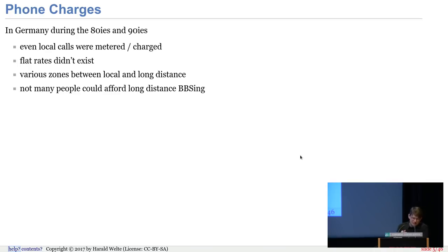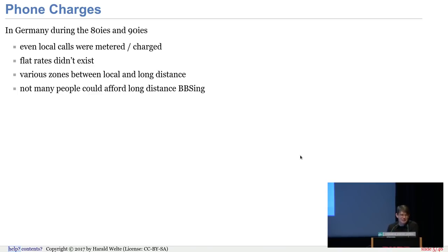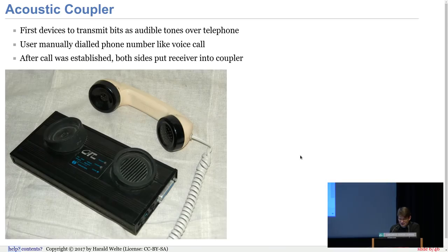Something to document for the international audience: in Germany at that time, even local calls were metered and charged by the minute. Flat rates didn't exist. There were multiple zones — not just local and long-distance, but different depending on distance, like up to 50 kilometers or more than 50 kilometers. Given the steep pricing, not so many people could afford long-distance BBSing, at least not for a long time.